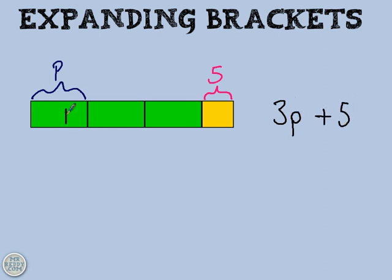OK, because I've got P, P and P. So I've got 3P and then adding 5 on at the end. Now, if I was to double all of this, then it would look like that. I'd have 2 lots of 3P plus 5. And then if I tripled it, it would look like that.